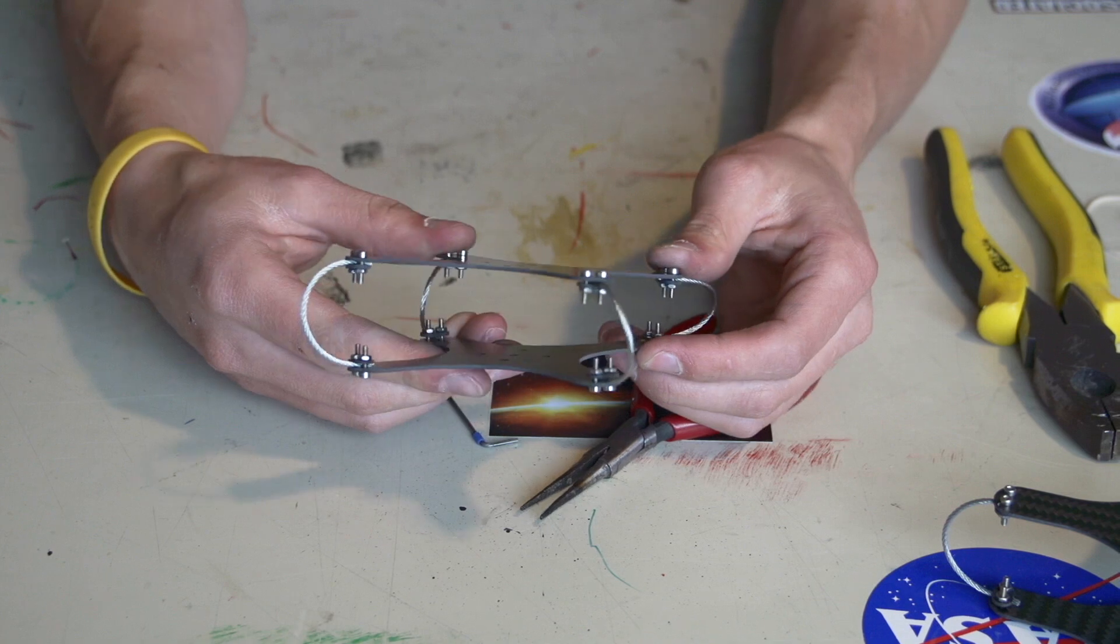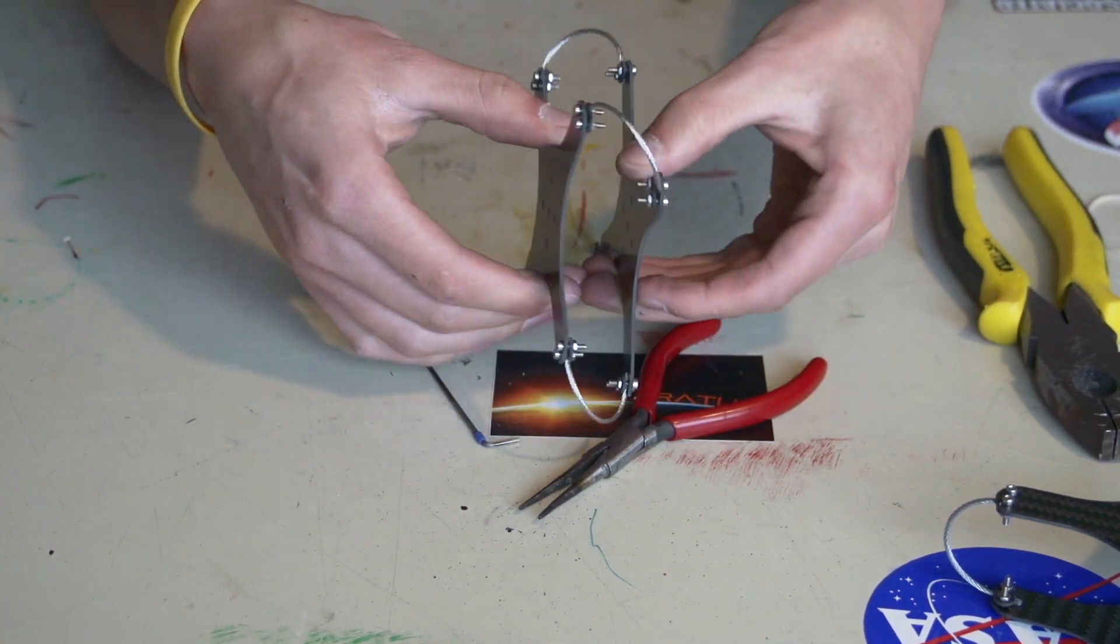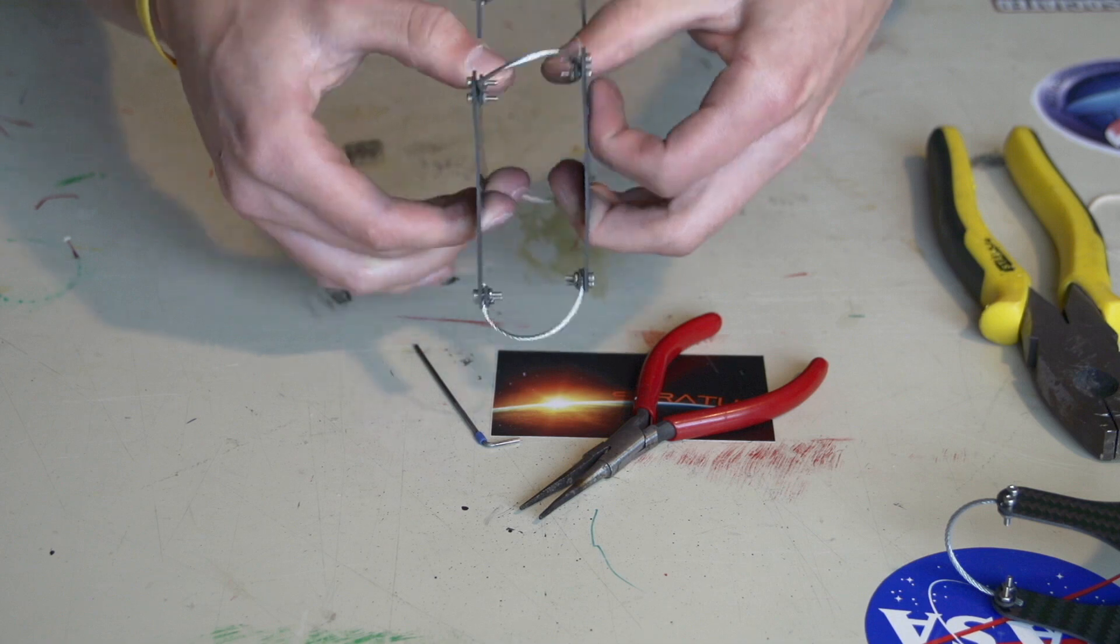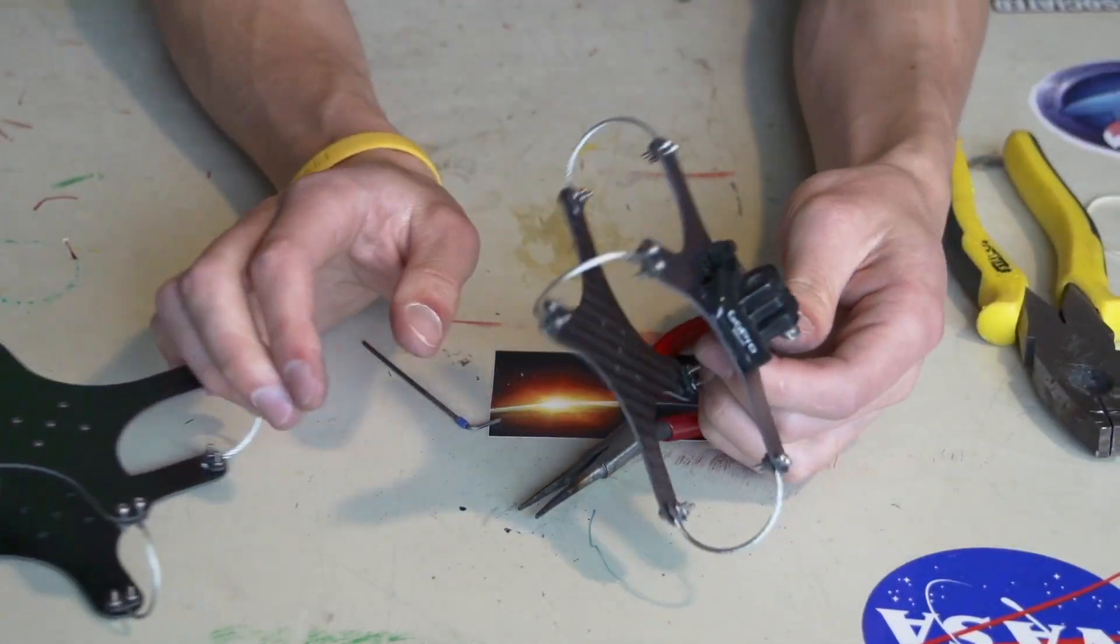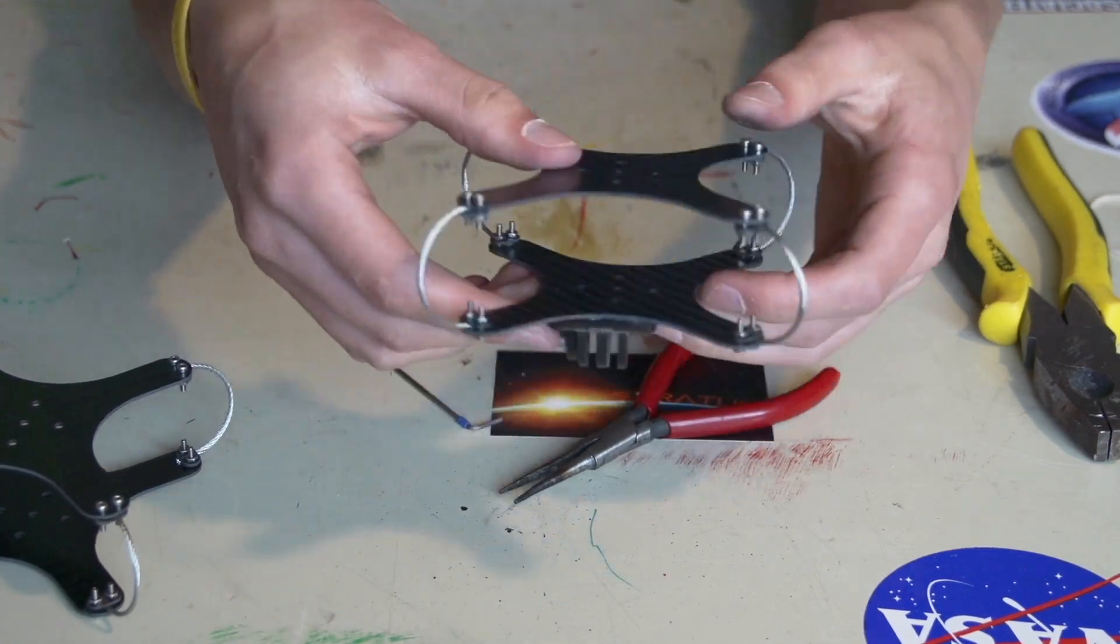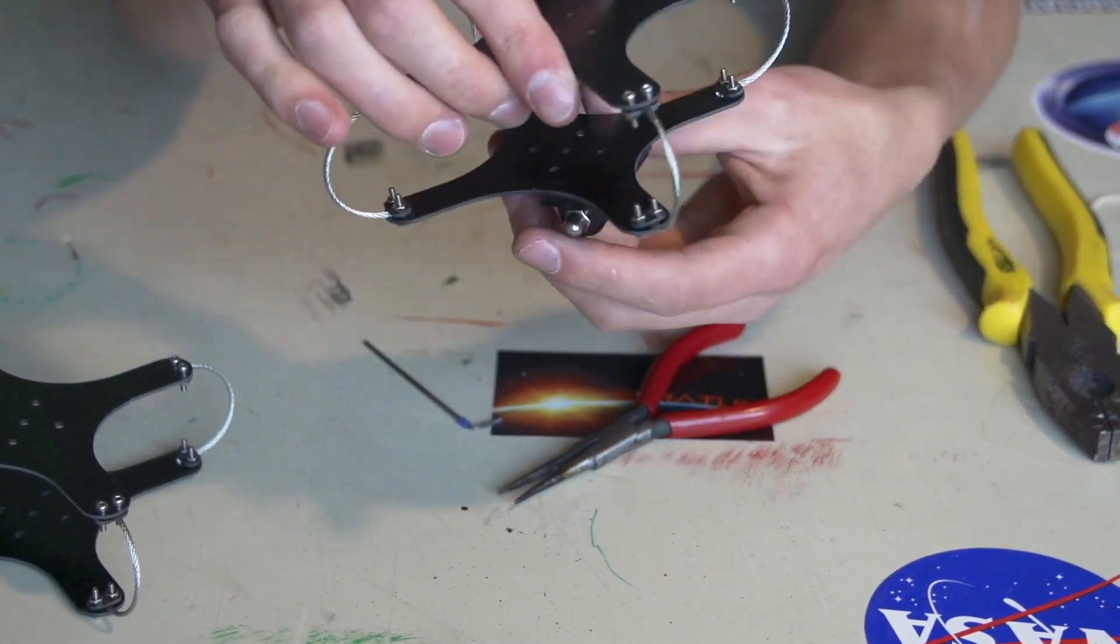Alright so that's all finished and assembled. And as you can see it squashes and I can pull it and no wires come out or anything like that. So now I'm going to talk about mounting the camera. So it's basically made to hang from your multi-rotor or whatever you decide to put it on, kind of like this.